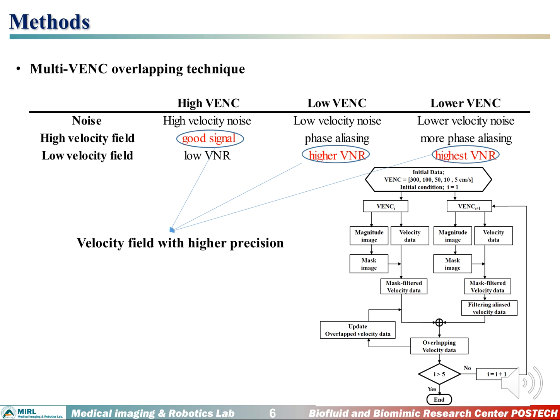This figure shows the schematic diagram of the present technique. We start from the velocity field data from the highest VENC and compare it with the lower VENC data. If some parts from the lower VENC data are found to be valid, we take the lower VENC data; if not, we take the high VENC data.